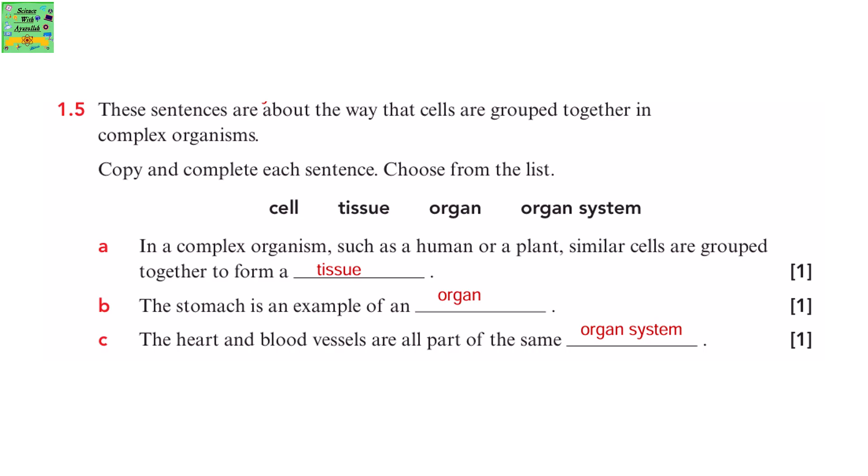These sentences are about the way the cells are grouped together in complex organisms. Copy and complete each sentence. Choose from the list: cell, tissue, organ, and organ system. In a complex organism such as a human or plant, similar cells are grouped together to form a tissue. The stomach is an example of an organ. The heart and blood vessels are all part of the same organ system.